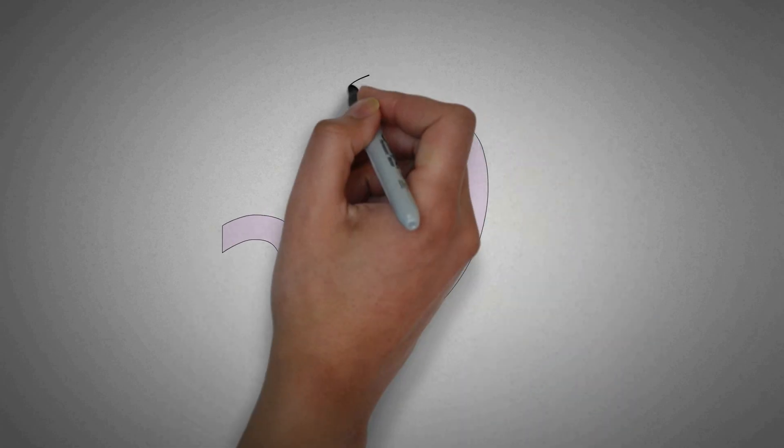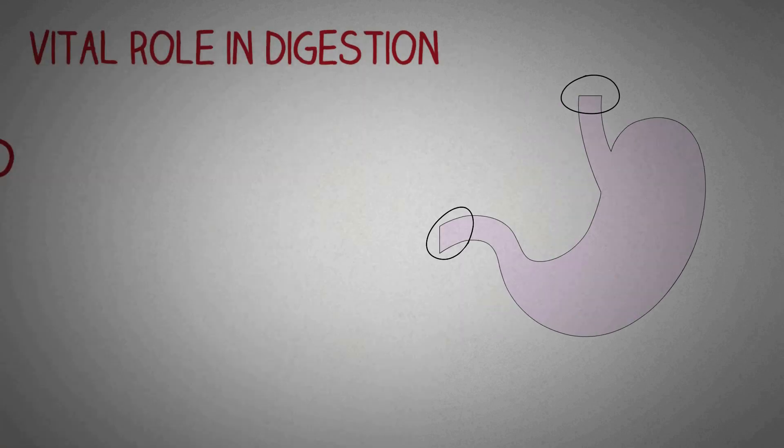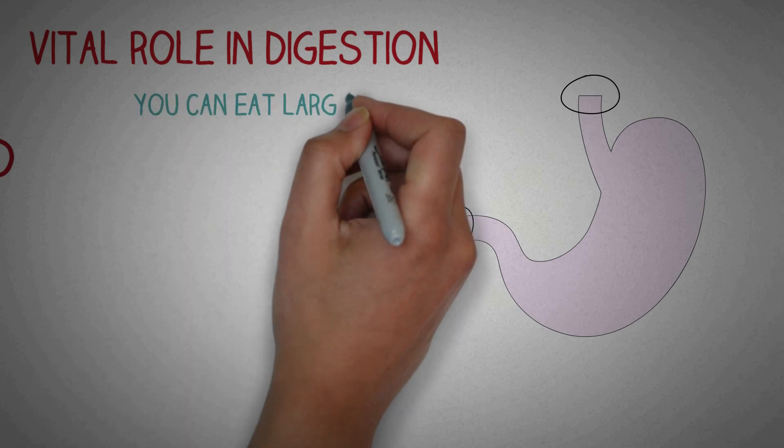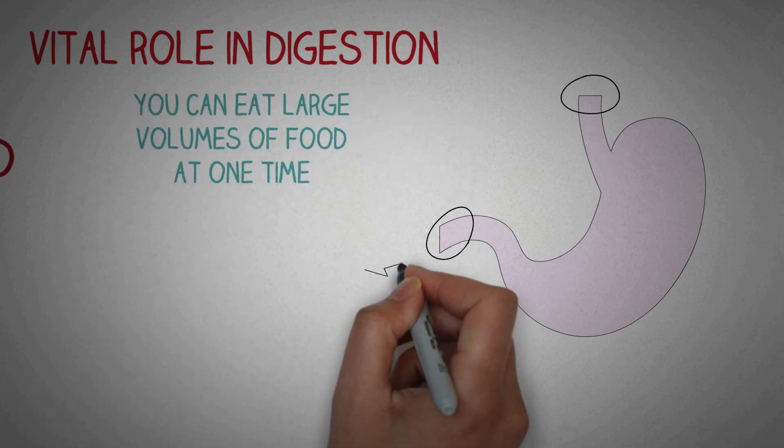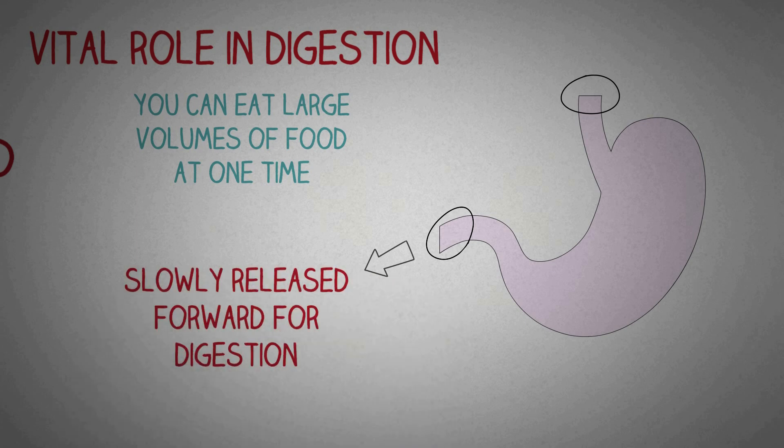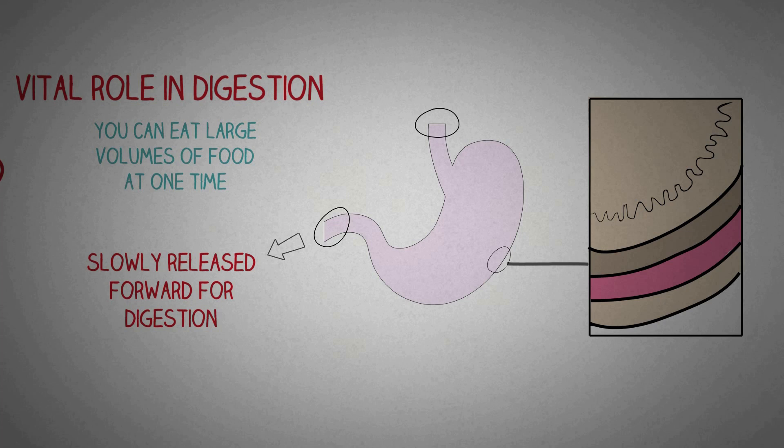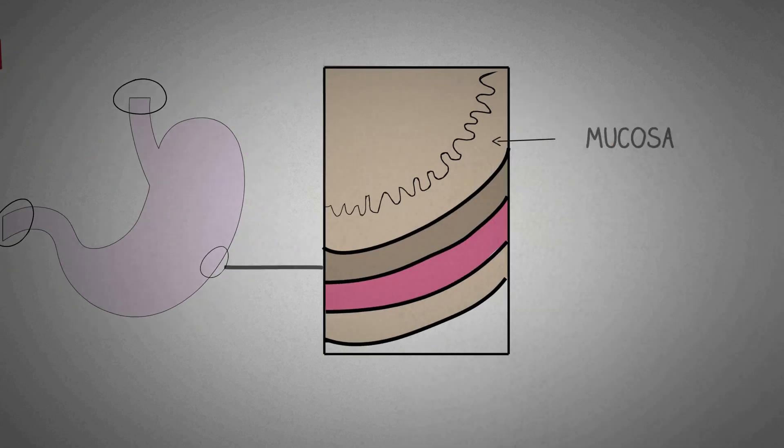The next organ in the digestive tract is the stomach. Stomach is a J-shaped organ and it is connected to the esophagus at the upper end and the duodenum at the lower end. It has a vital role in digestion. It has large volume so you can eat large amounts of food at one time which is digested slowly by controlling its release through the stomach. Although it's true you can live without your stomach, but the patients in which the stomach has been removed have to eat very small quantities of food frequently. The stomach has layers of smooth muscles in its walls which turn the stomach into a literal mixer.